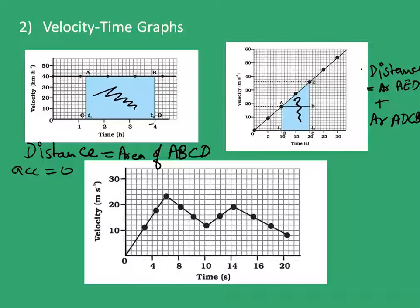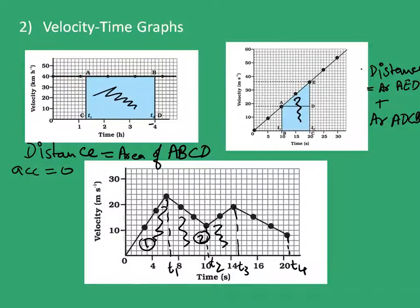In the third example, to find the total distance traveled we divide it into time intervals t1, t2, t3, and t4. We individually calculate the area for region 1, region 2, region 3, and region 4 — the same way we did for the second case — and then add all these areas to get the total distance traveled.